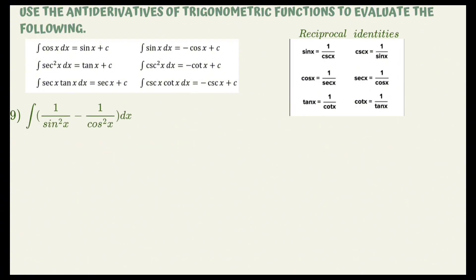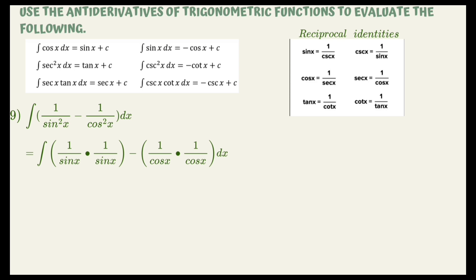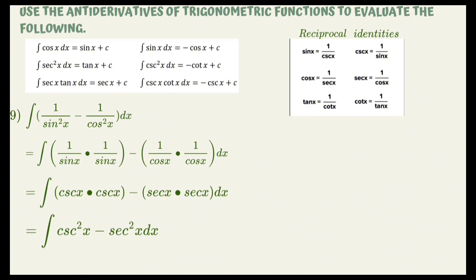Example number 9: evaluate the integral of (1/sec²x minus 1/cos²x) dx. Since there is an exponent of 2, we can rewrite: 1/sec²x = (1/sec x)(1/sec x), and 1/cos²x = (1/cos x)(1/cos x). Since 1/sec x = cos x and 1/cos x = sec x, these become cos x times cos x minus sec x times sec x dx. Multiplying gives (cos²x minus sec²x) dx. Applying our identity, this equals negative cot x minus tan x plus C.